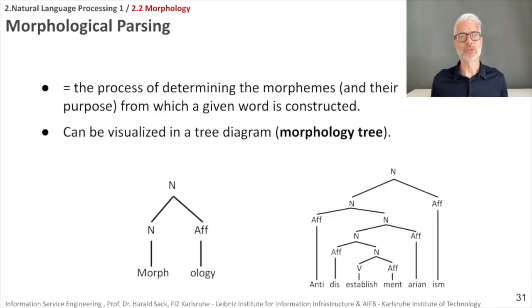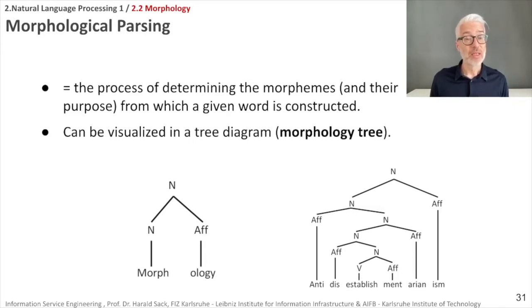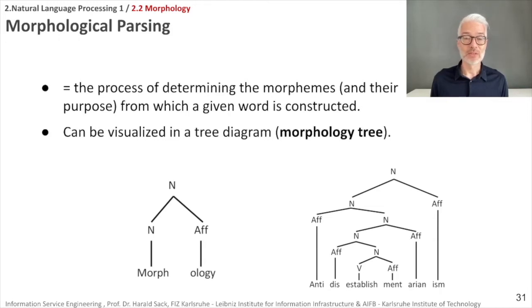Morphological parsing is the process of determining the morphemes and their purpose from which a given word is constructed. This can be visualized as a morphological parse tree. For example, 'morphology' is a noun consisting of 'morph' (a noun) and the affix 'ology.' To demonstrate a really complex word, consider 'antidisestablishmentarianism' — the root is 'establish' and many affixes surround it.